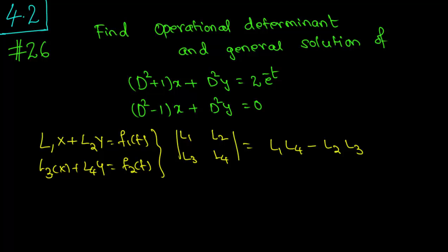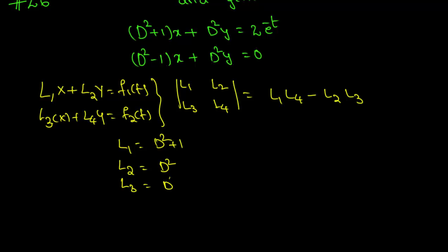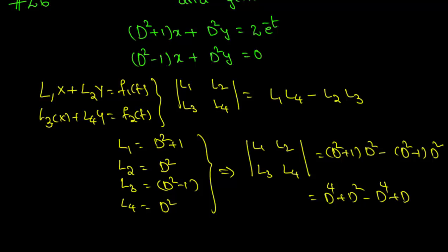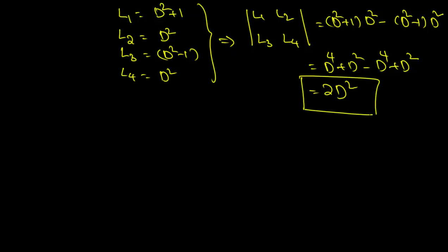Here L1 = D² + 1, L2 = D², L3 = D² − 1, and L4 = D². This gives us L1·L4 − L2·L3 = (D² + 1)·D² − D²·(D² − 1) = D⁴ + D² − D⁴ + D² = 2D². Therefore the operational determinant is 2D².